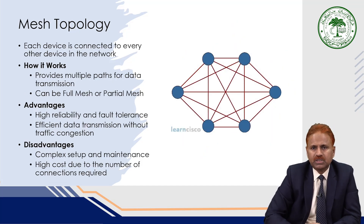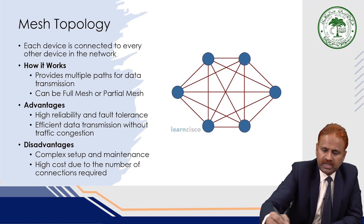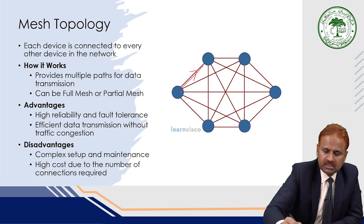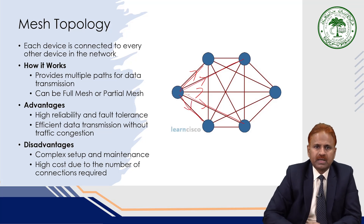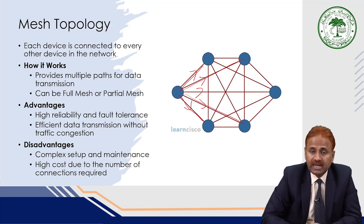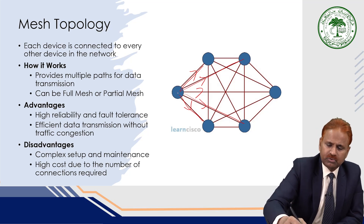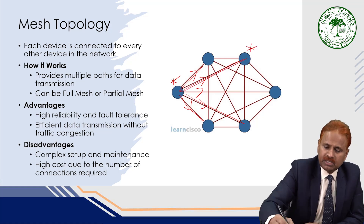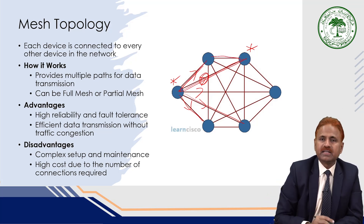In mesh topology, each device is connected to every other device in the network via an exclusive single line. It provides multiple paths for data transmission. For example, to transmit data from one computer to another, if something goes wrong with the direct line, an alternate path is available — data can be routed through another computer to reach the destination.